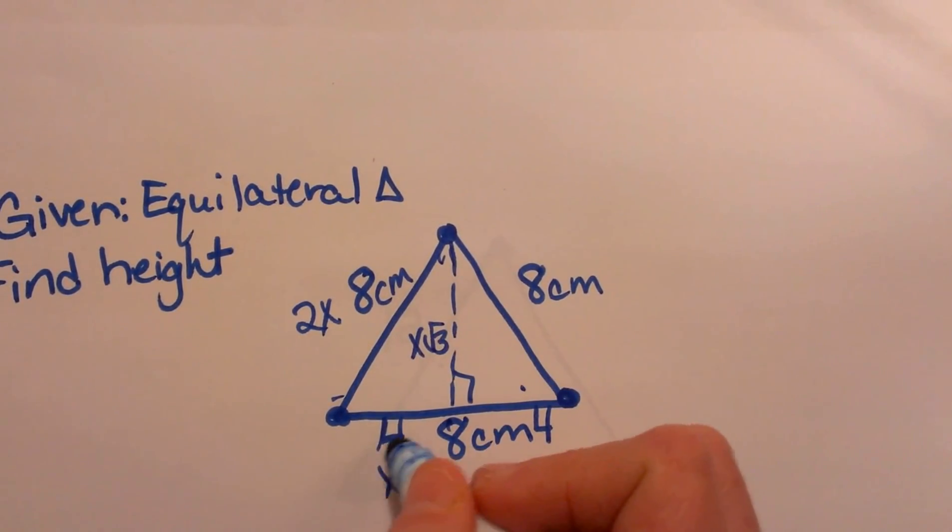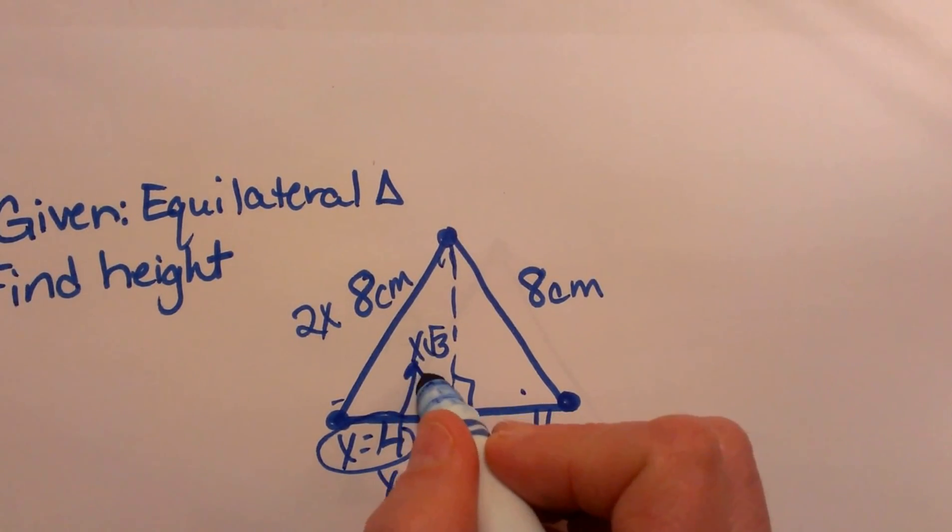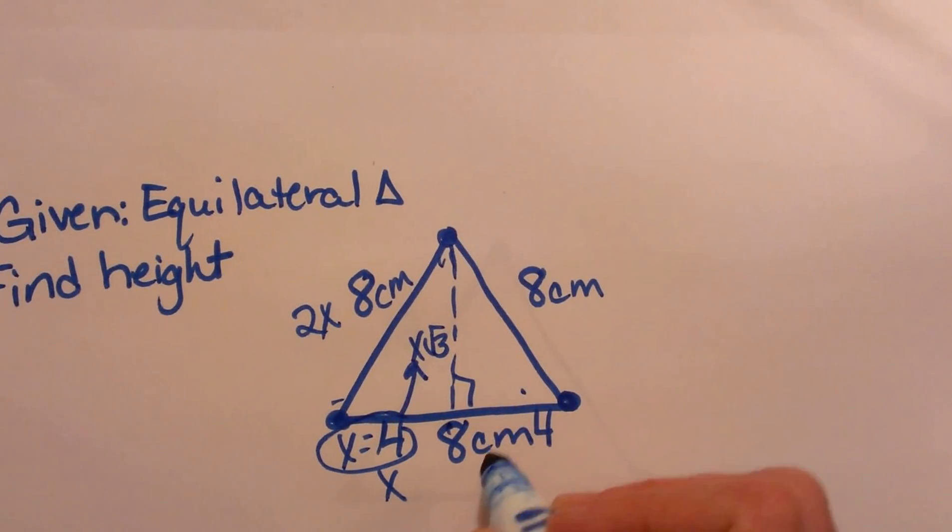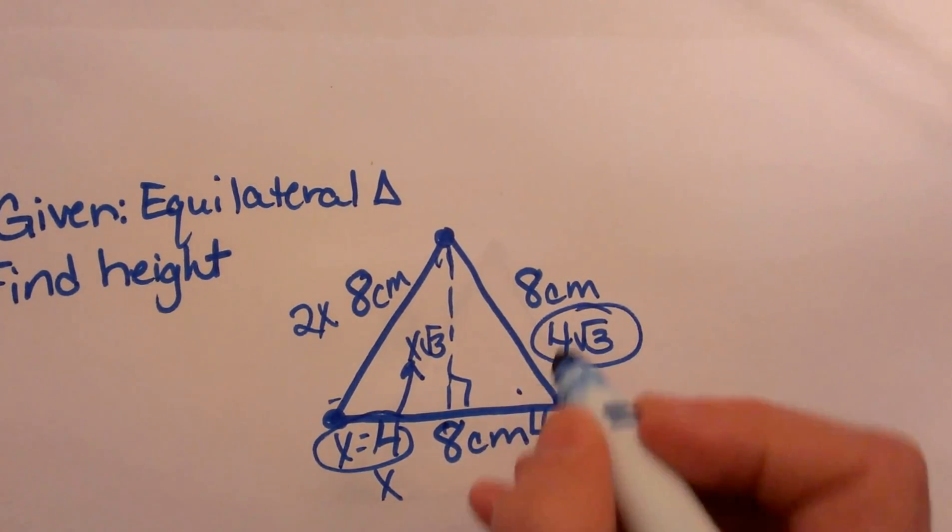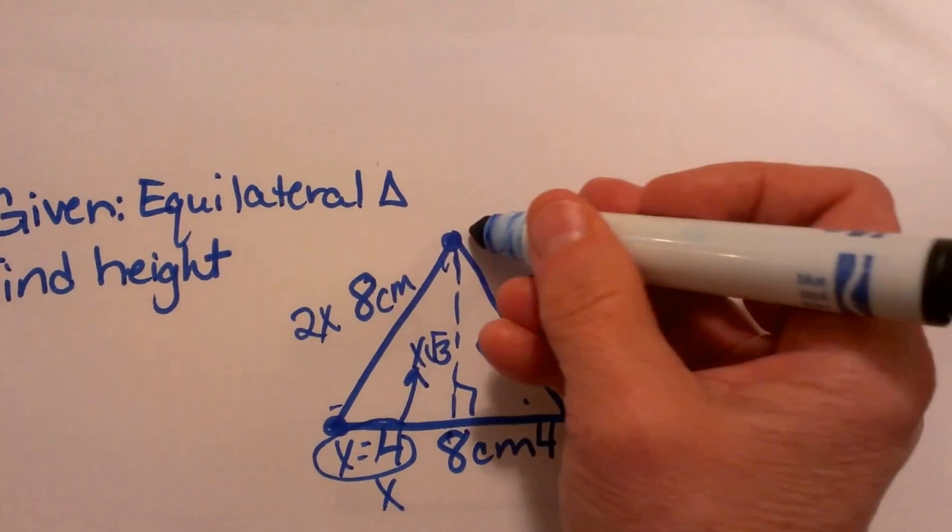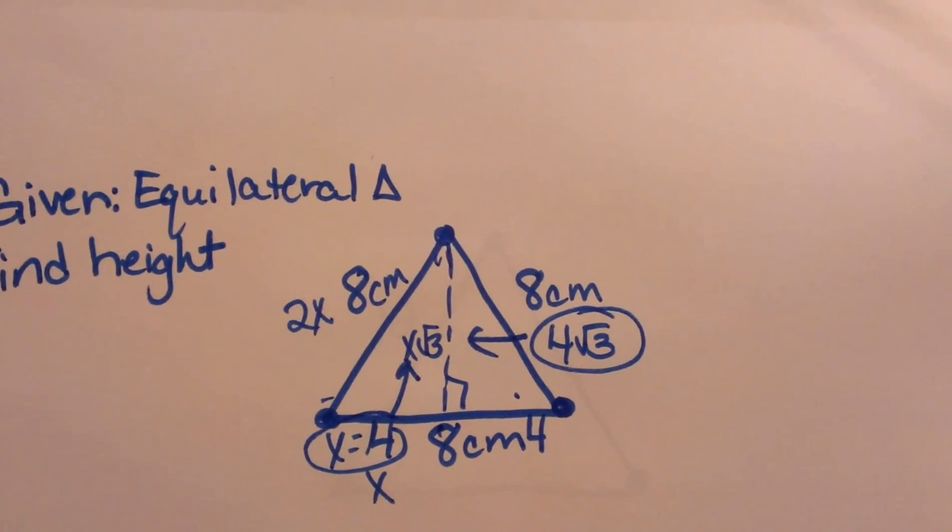I am just going to plug in my values. Since x is equal to 4, I am going to plug in a 4 here, so the height is 4 square root of 3. And that is how you find the height of an equilateral triangle. Hope this video was helpful.